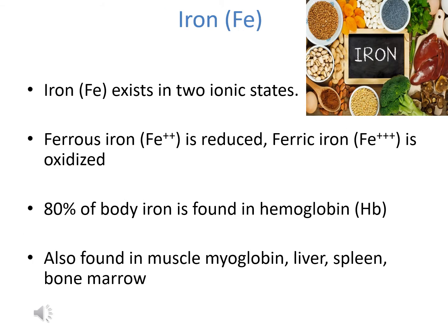The first trace mineral we'll review is iron. Iron is unique in that it can exist in two ionic states: a reduced state, known as ferrous iron, and an oxidized state, referred to as ferric iron. Eighty percent of the iron in our body is located in our hemoglobin. The remaining 20 percent can be found in our muscle myoglobin, which is a protein in muscle that holds onto oxygen. It's also found in our liver, spleen, and bone marrow.